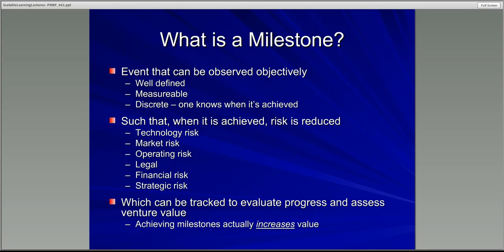A milestone is something you want to have happen, and if it happens successfully, your business is on the way — it is less risky than it was beforehand. You want milestones to be objective, observable, and well-defined. You measure it and you know when it's happened. So you don't just say 'we open our doors' — that's not a clearly discrete event. You want something where people can say yes, indeed, the store is open, you've had a successful day, you've had multiple customers — and it can clearly be marked as achieved or not achieved.